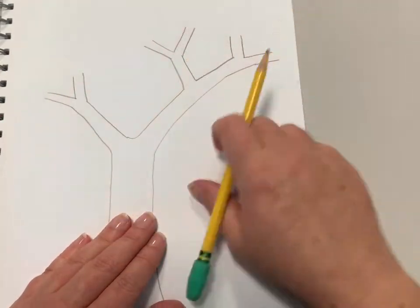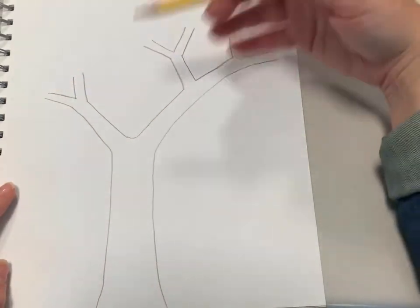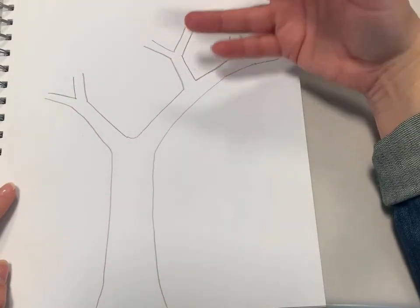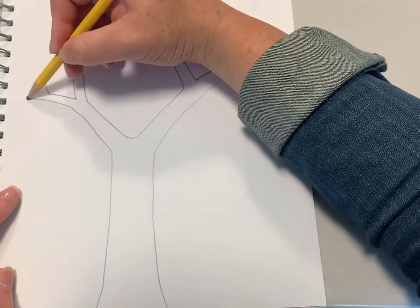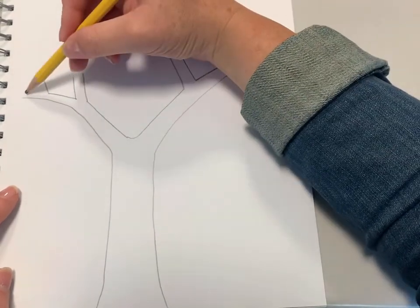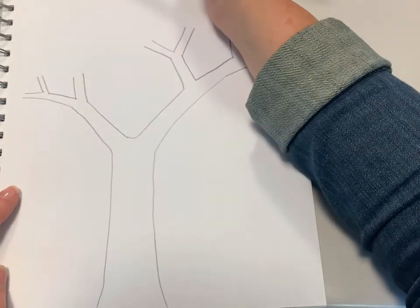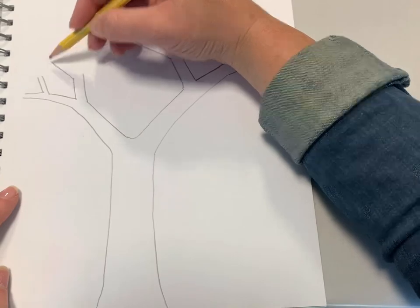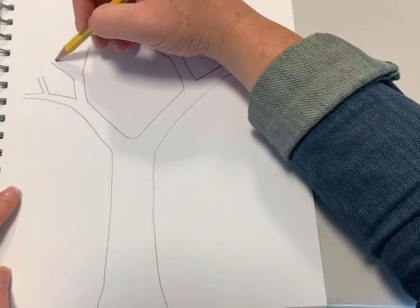So we're going to be going to the end of each one of those branches and repeating the same process over and over again, just making the copycat lines get a little bit closer to the original lines each time. Spreading out the branch and drawing the copycat line very close to it on the end of each one.